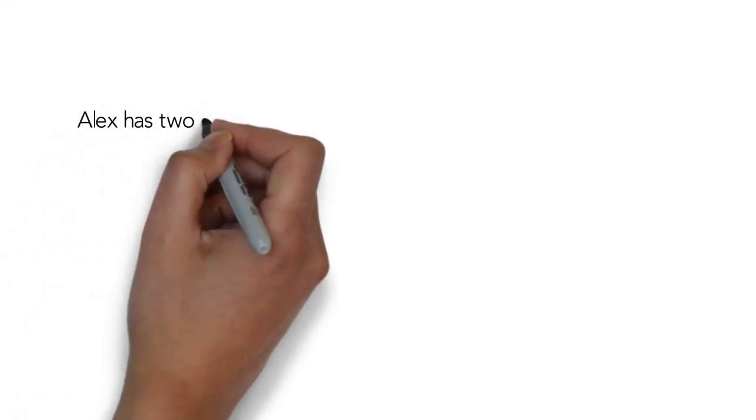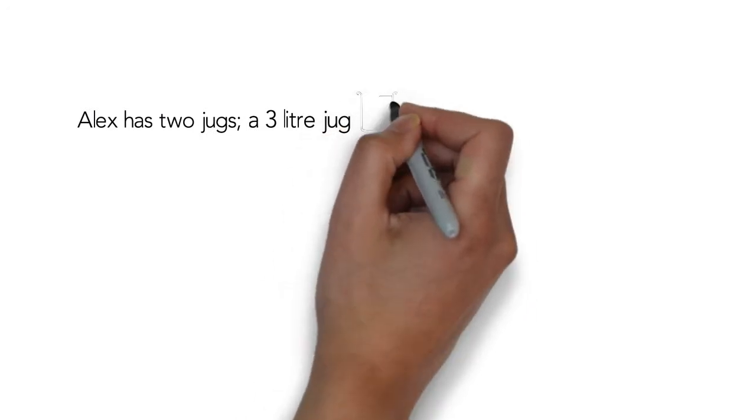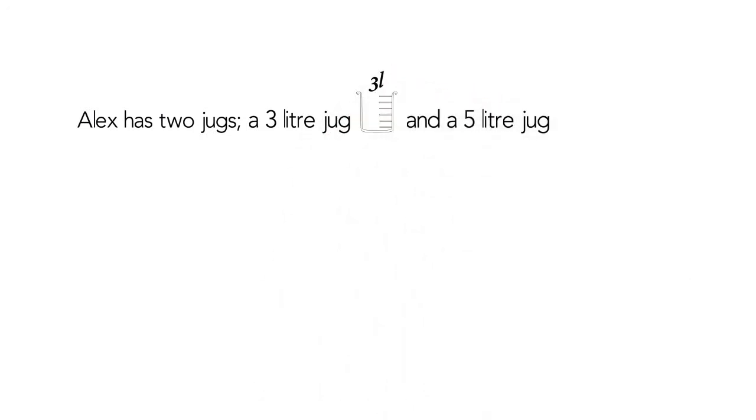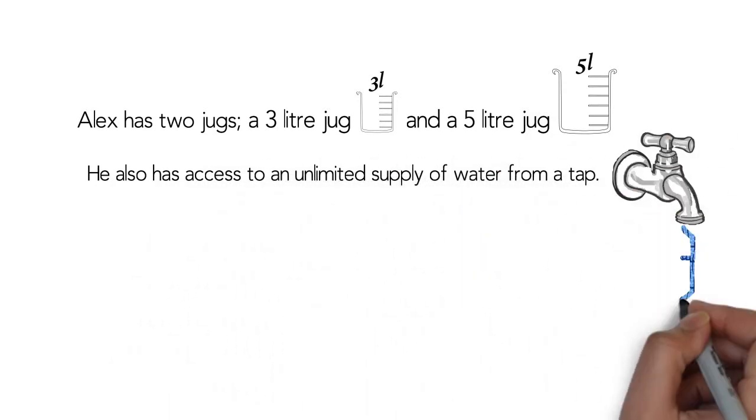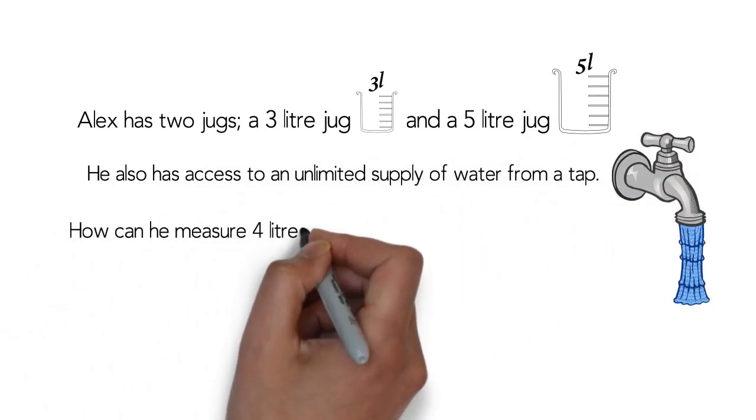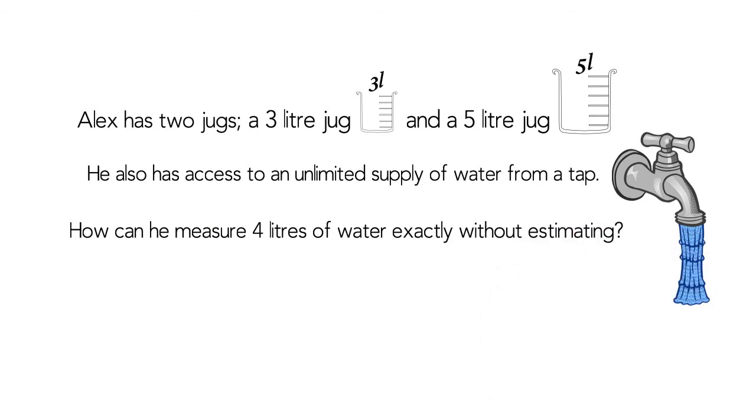Today we have a math problem for you to solve. Alex has two jugs, a 3 litre jug and a 5 litre jug. He also has access to an unlimited supply of water from a tap. How can he measure 4 litres of water exactly without estimating?